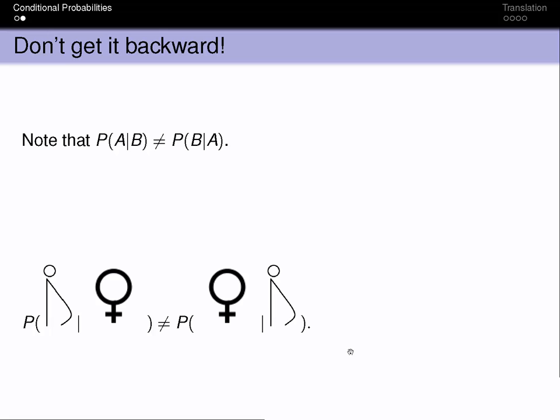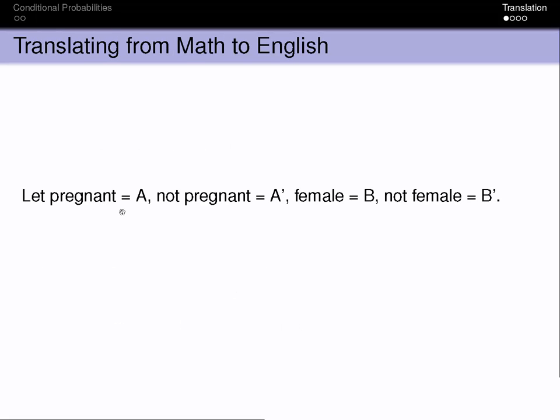You don't want to mess that up. So let's talk about how we can translate from English to math and math to English. So let's represent being pregnant by A. Not pregnant is not A. Female B and not female, not B.